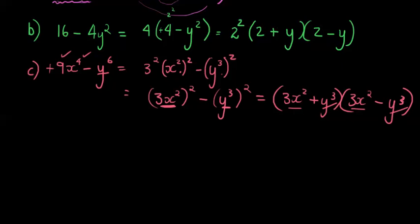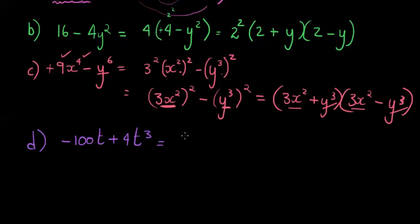Let me do one more example to illustrate two things: negative 100t plus 4t to the power of 3. As I said before, the first important thing to do is find a common factor — that is always the very first step when asked to factorize. It's important to note this is not the difference of two squares because t can't be written as something squared, and neither can t to the power of 3 — these exponents are odd, not even.